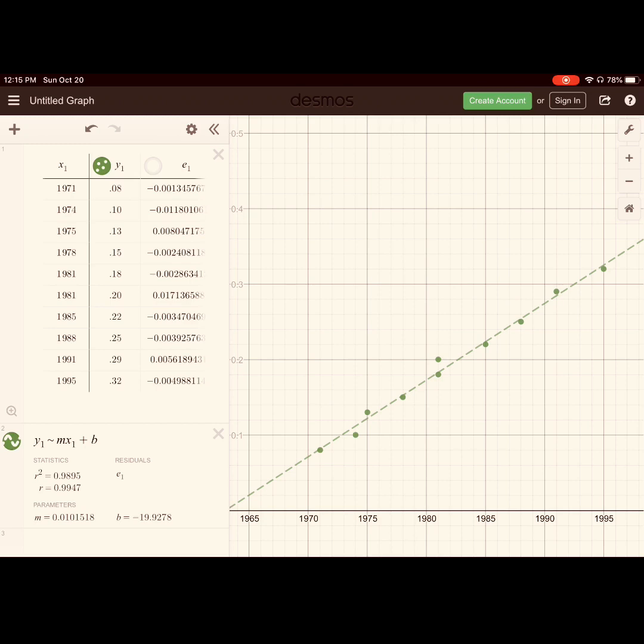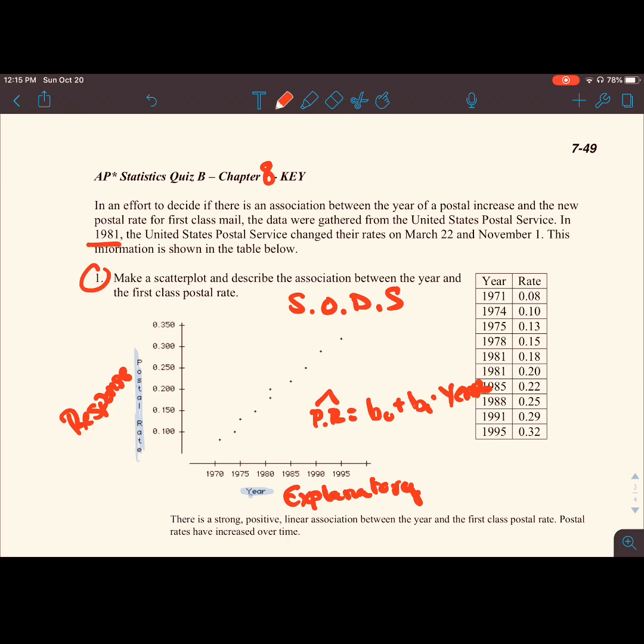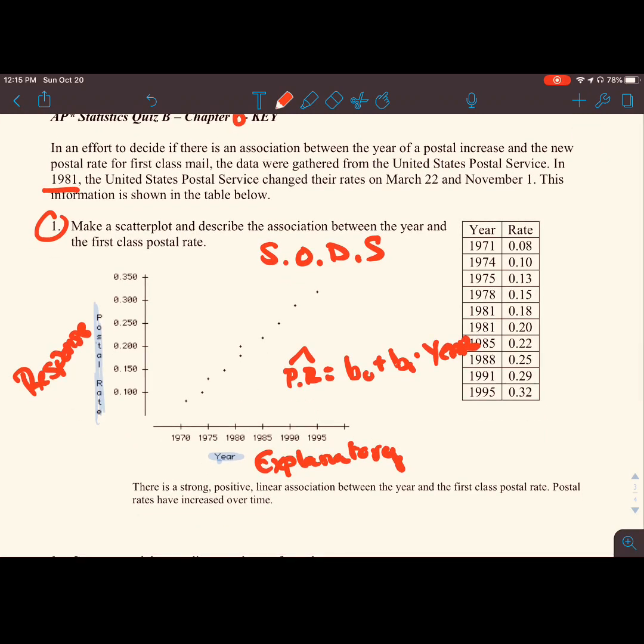We also see that our slope is 0.01015, and our y-intercept is negative 19.92. Additionally, if we turn on a residuals graph, we can see that our residuals don't show any pattern. We have many very small residuals as we go over time. Here's our scatterplot. It's important that we label those. Let's label the x and y-axes. There is a strong, positive, linear association between the year and the first-class postal rate. Postal rates have increased over time.